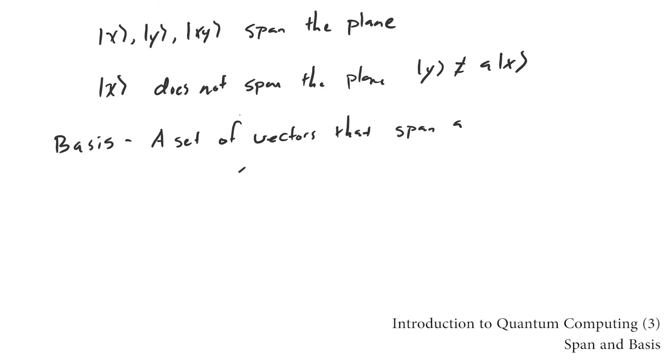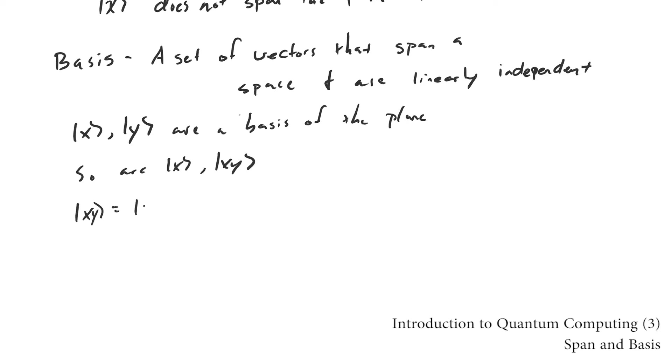The span of a set of vectors is all the vectors that can be expressed as a linear combination of the ones in the set. The span can also be used as a verb. A basis is a set of vectors that both span a space and are linearly independent, so it's a minimal set of vectors that span a space.